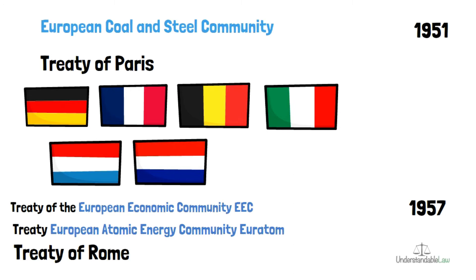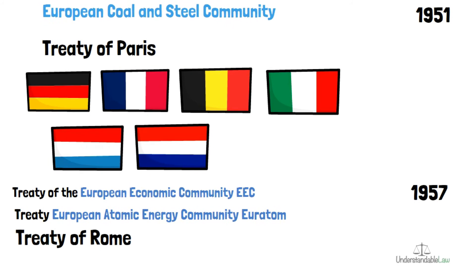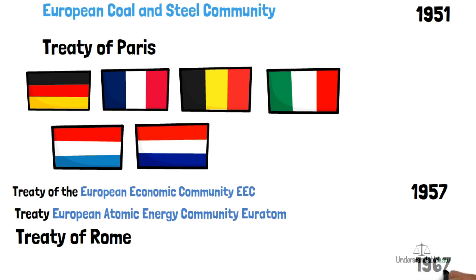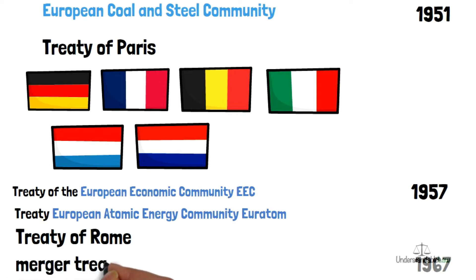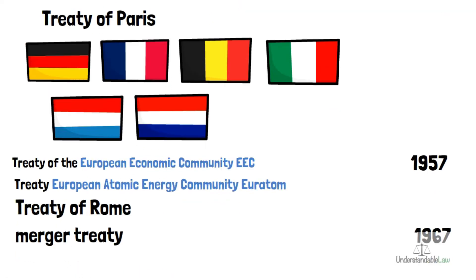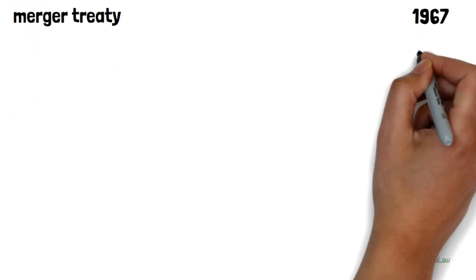There were three treaties and three communities, but in practice they worked together as one. A few years later in 1967, these communities were merged by means of a merger treaty.